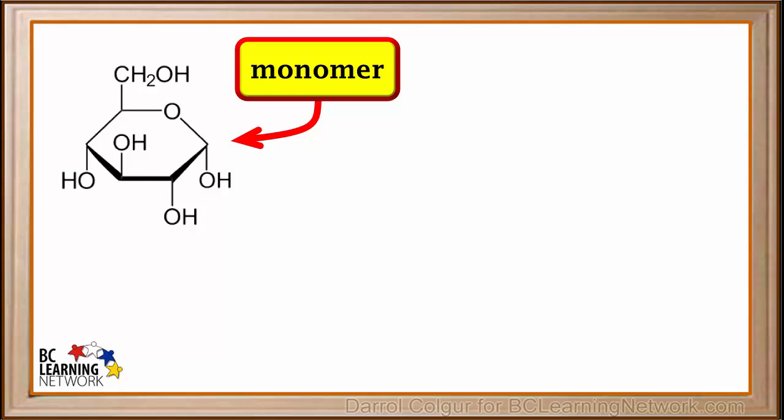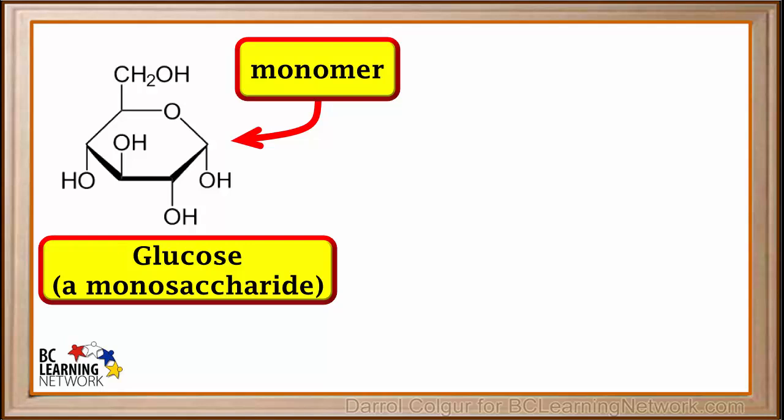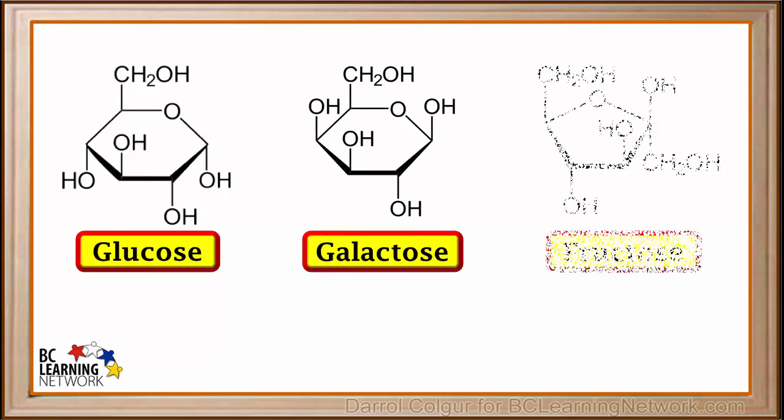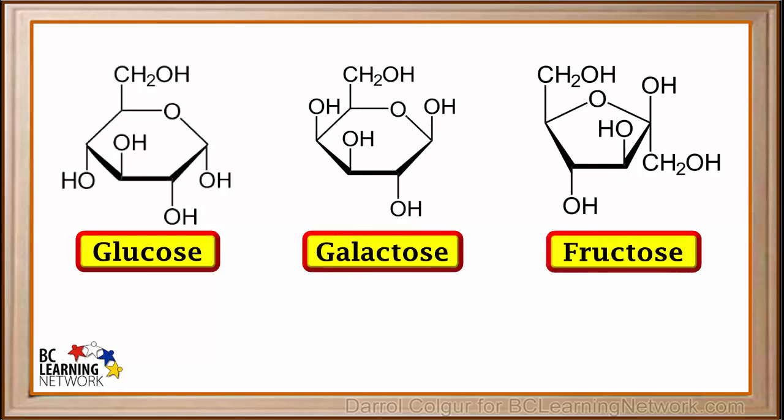Polysaccharides are made up of many smaller molecules called monomers joined together. One common monomer is glucose. Glucose is a simple sugar or monosaccharide. Two other common monosaccharides are galactose and fructose. You can see these all have slightly different shapes or structures.